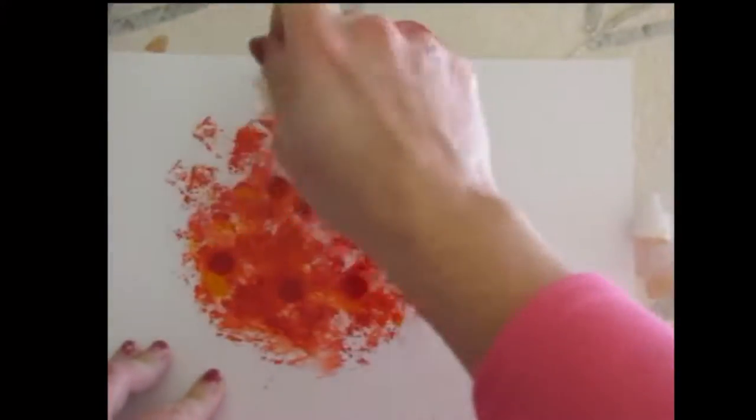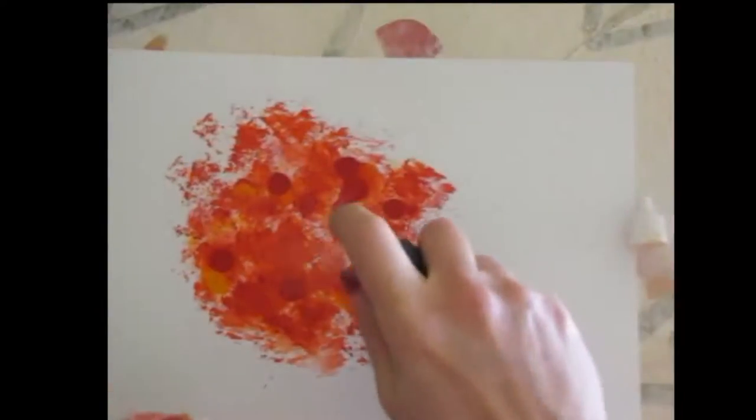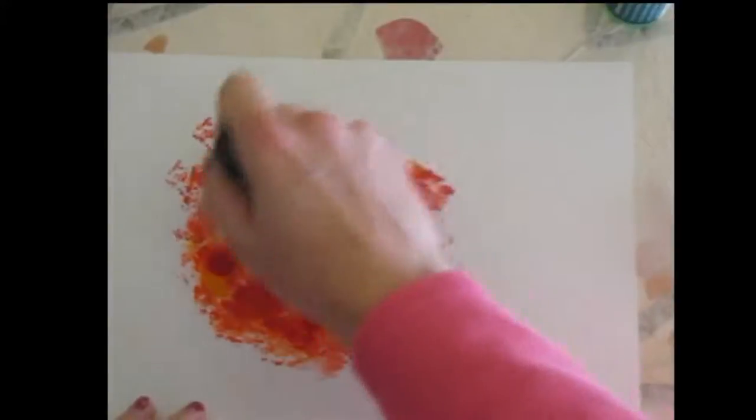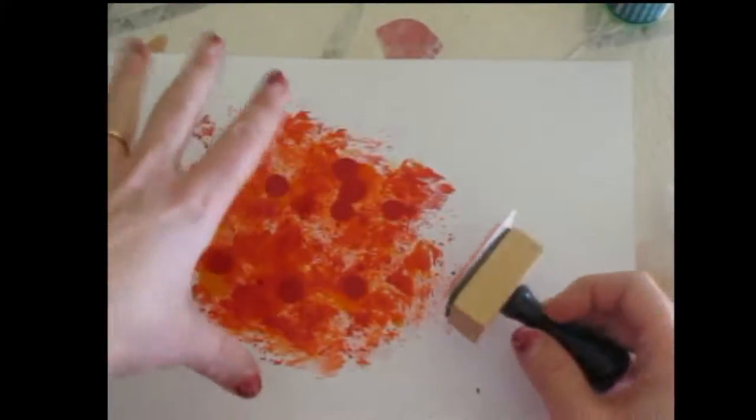So if you are working on something and it just dries too quickly you can just spritz it and kind of keep working on it. Notice how the first drops I put down are not moving anymore because they've already soaked into the paper.